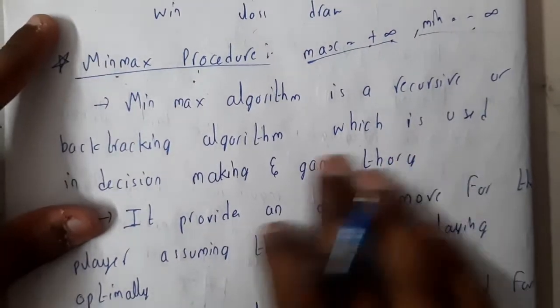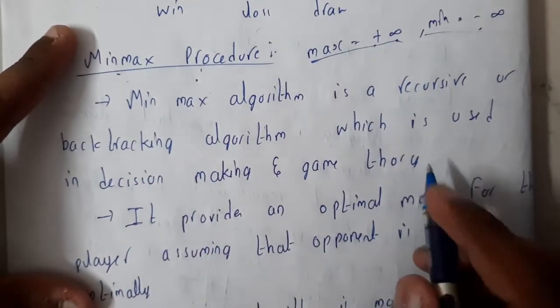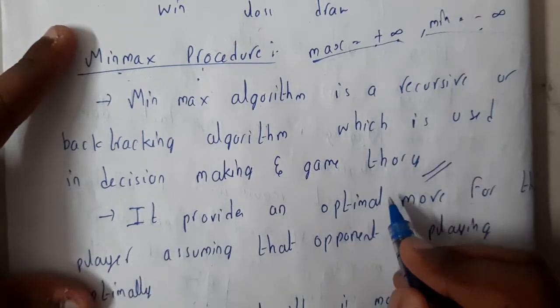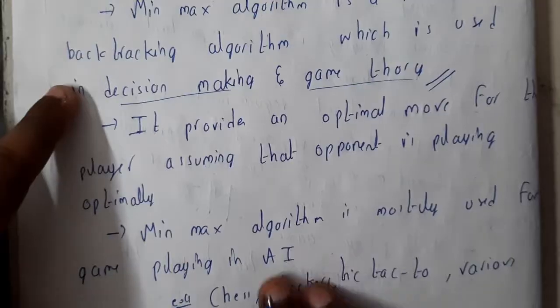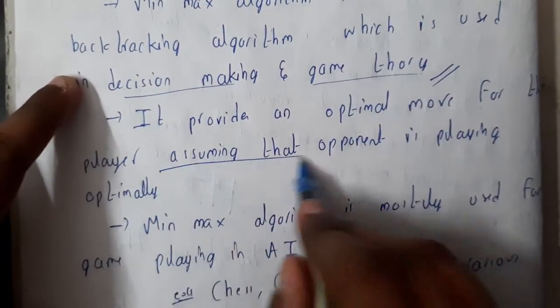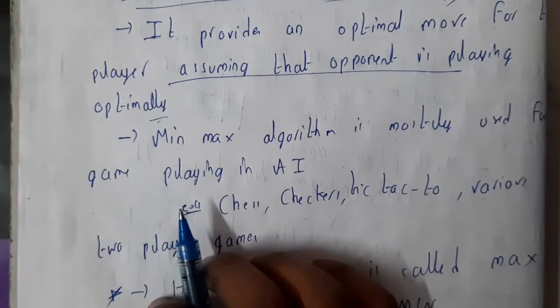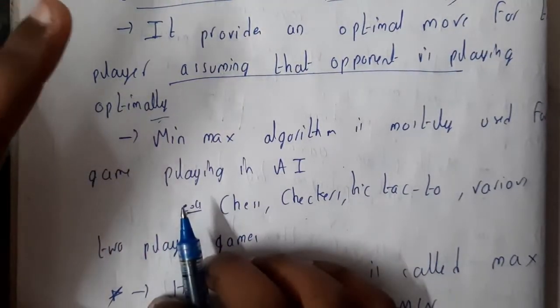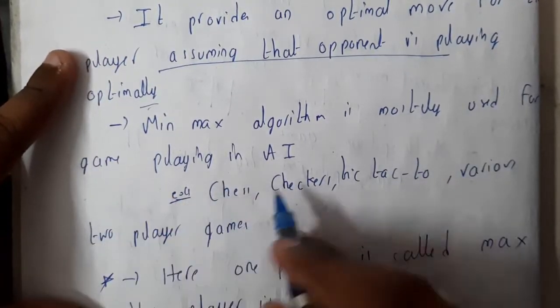It provides an optimal move for each player assuming that the opponent is playing optimally. We will be making the best moves to win the game. Minimax algorithm is mostly used for games such as chess, tic-tac-toe, checkers, various multiplayer games.